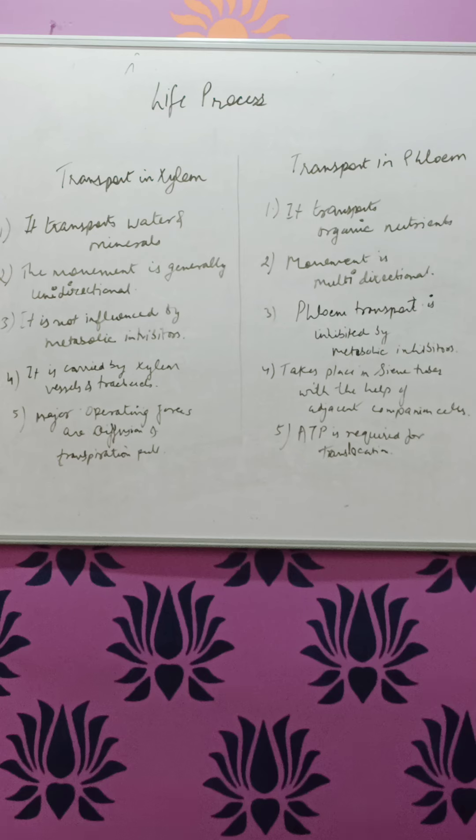Fourth point: transport in xylem is carried out by xylem vessels and tracheids, and transport in phloem takes place in sieve tubes with the help of adjacent companion cells.